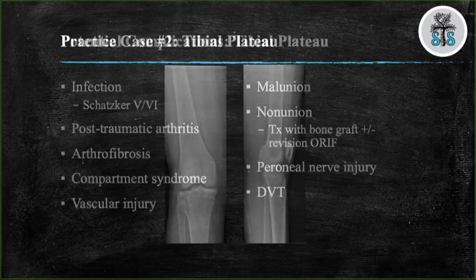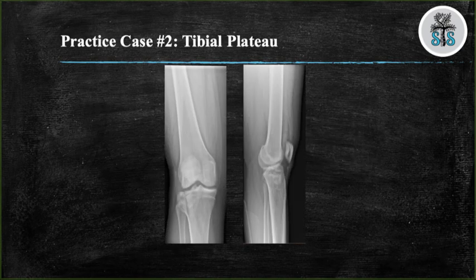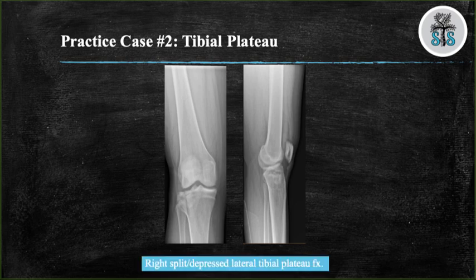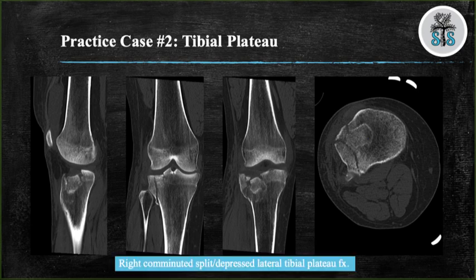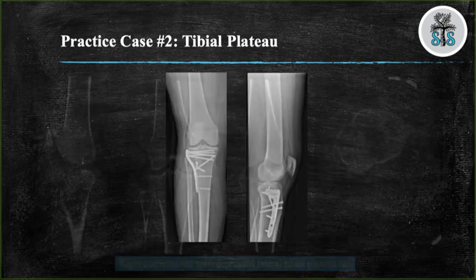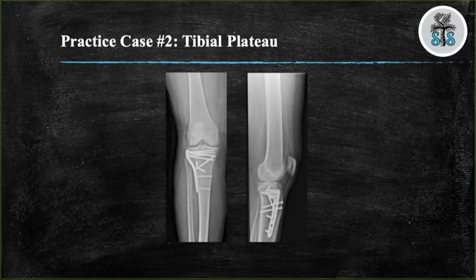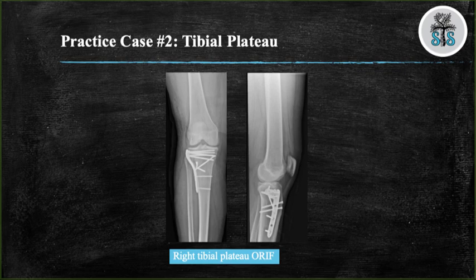For the second case, we have two views — AP and lateral — of a right knee demonstrating a lateral split depressed tibial plateau fracture. A CT was performed which allowed better appreciation of the amount of depression of the articular surface. This fracture was fixed with a buttress plate on the lateral tibia.